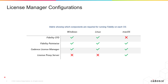It is important to keep in mind the different elements that you're going to need in order to run Fidelity CFD and Fidelity Pointwise depending on the operating system that you're using. For example, if you're using a Windows machine you're going to need to install the Fidelity CFD package, the Fidelity Pointwise package, and of course the Cadence License Manager. The same three packages are required on a Linux operating system.